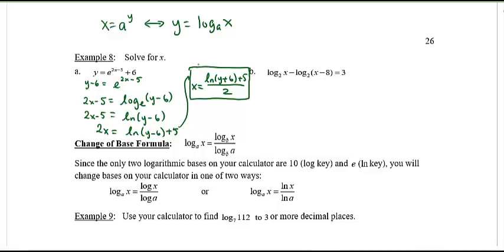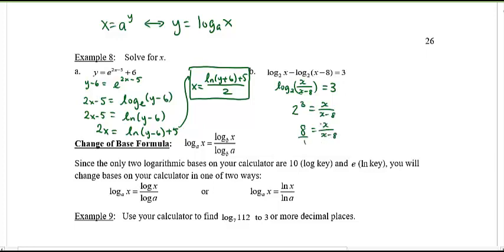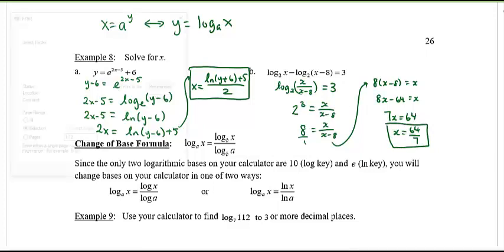For equations with two logarithms, combine them first. A subtraction of logs becomes a division: log(x / (x − 8)). Then change from logarithmic to exponential form: 2^3 = x / (x − 8). Since 2³ = 8, cross-multiply to get 8(x − 8) = x. Expand and simplify to solve for x. The answer is an ugly fraction, but it's the correct one. You can always verify by plugging it back in.